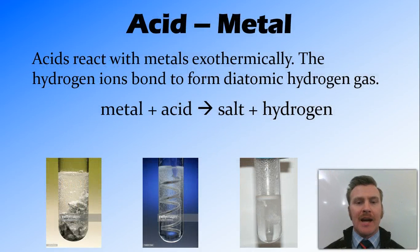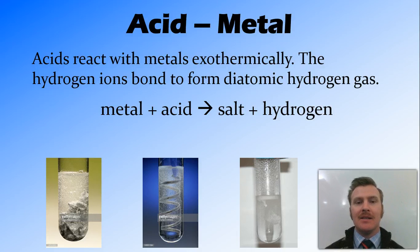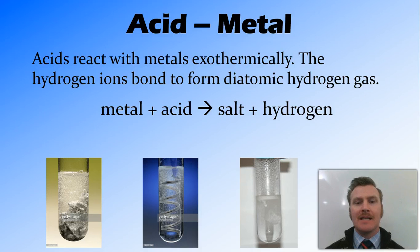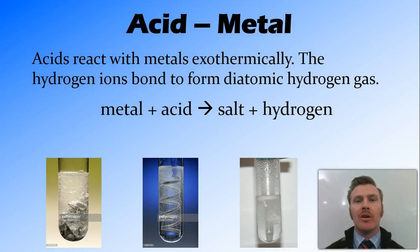So firstly, the acid-metal reaction. This is an exothermic reaction, where the hydrogen ions provided by the acid bond together, and they form the diatomic hydrogen gas. The general equation for this is: metal plus acid reacts to form salt and hydrogen, remembering that salt is a generic term that we use for any ionic compound.